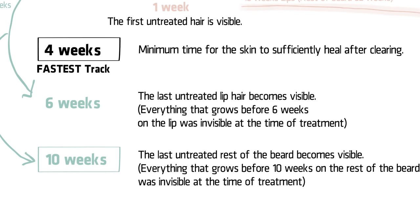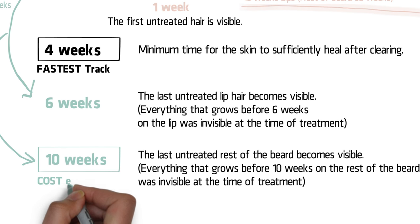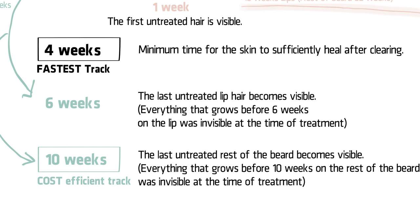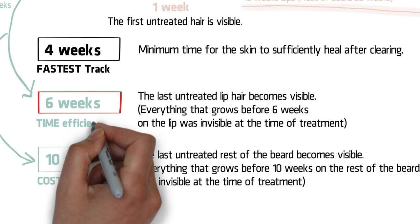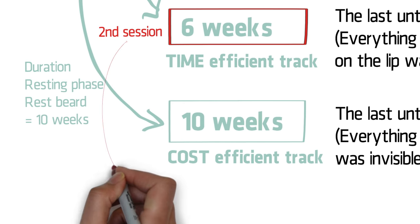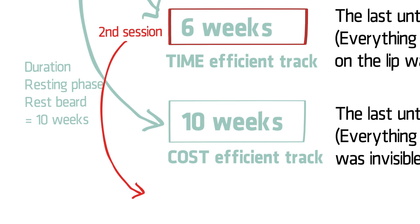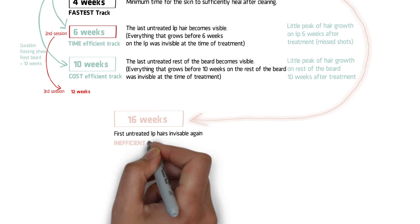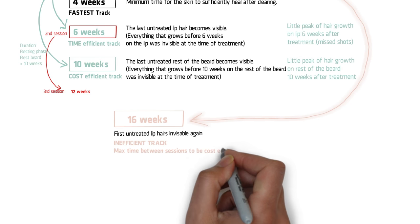The most cost-efficient track would be waiting 10 weeks between treatments, so all hairs that were invisible during the first session can be treated in the second session. You will need fewer but longer sessions, with about 2.5 months between every session — total timeframe from start to finish will be at least 1 year. To balance total time and costs, we mostly advise a time interval of 6 weeks. All hairs are treated at least once after the third session at 12 weeks. The maximum recommended interval is 16 weeks, after which untreated lip hairs become invisible again.